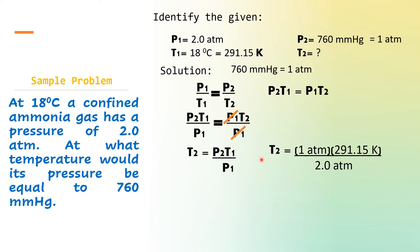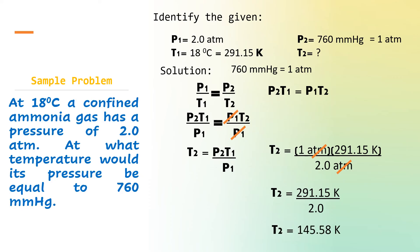Now substitute all the given. Final temperature is equal to: final pressure is 1 atmosphere, initial temperature is 291.15 Kelvin, and initial pressure is 2 atmosphere. Cancel atmosphere. 1 multiplied by 291.15 Kelvin gives 291.15 Kelvin, divided by 2. The answer is 145.58 Kelvin. Our final temperature is lower compared to the initial temperature, because the initial pressure is higher than the final pressure. Hopefully you got the correct answer.